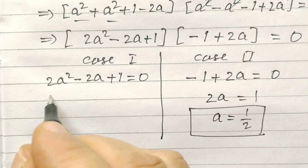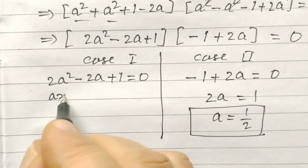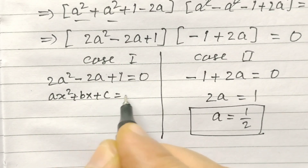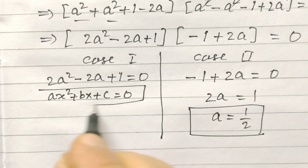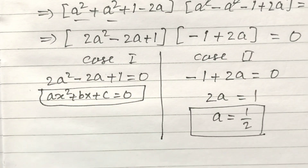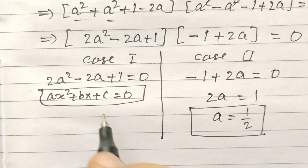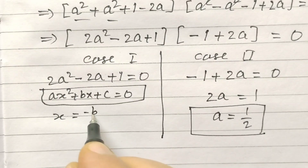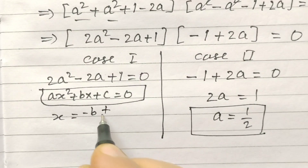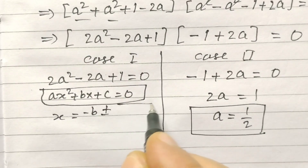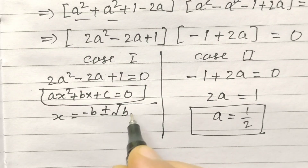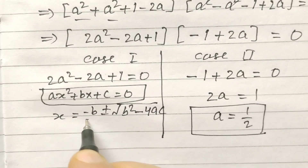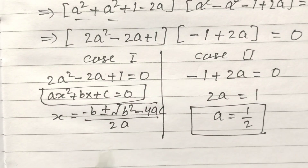Using the general quadratic equation Ax² + Bx + C = 0, the solution is x equals minus B plus or minus square root of B² minus 4AC, all over 2A.